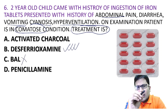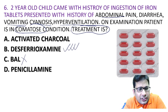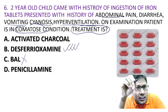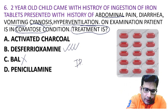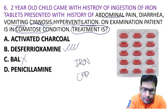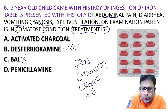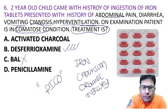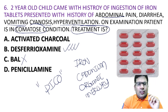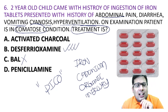BAL is given in arsenic poison and used in heavy metal poisoning, but in iron poisoning, desferoxamine is the correct answer. Remember: BAL is contraindicated in iron and cadmium poisoning and also in organic mercury poisoning. The mnemonic is PICO — P for peanut allergic, I for iron, C for cadmium, O for organic mercury. In these four conditions BAL is contraindicated.